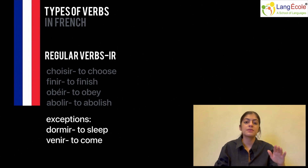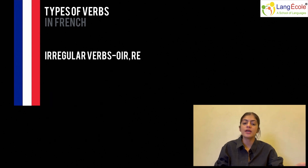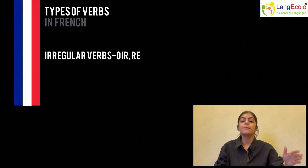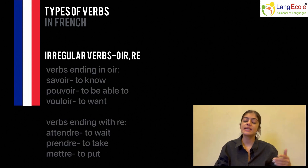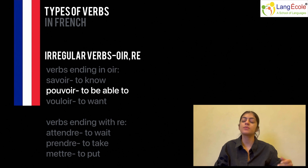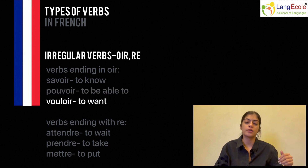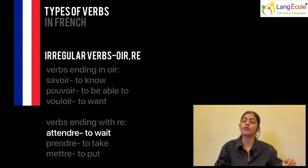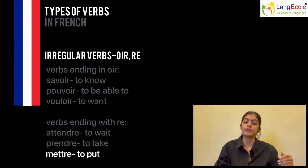Such examples must be learnt by heart. Now that we know about regular verbs, we will move on to irregular verbs. Verbs that end with -oir and -re mostly fall under the category of irregular verbs. Examples of verbs ending in -oir include savoir – to know, pouvoir – to be able to, vouloir – to want. Verbs ending with -re include attendre – to wait, prendre – to take, mettre – to put.